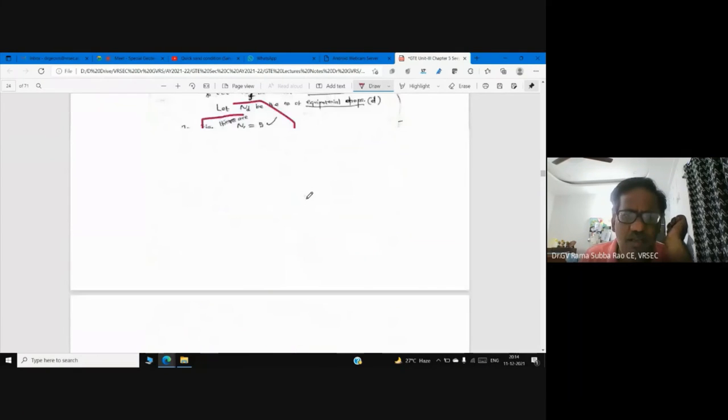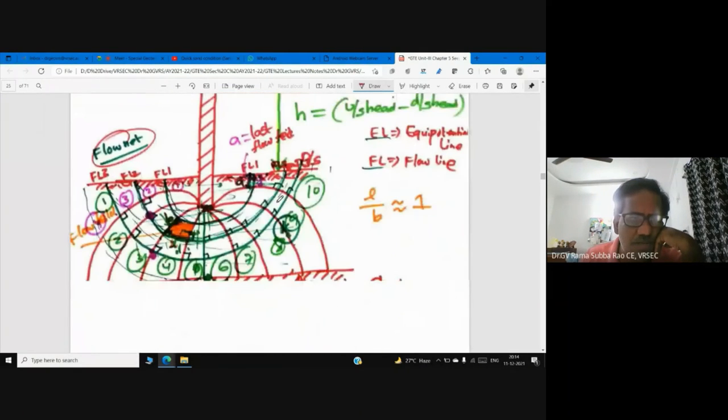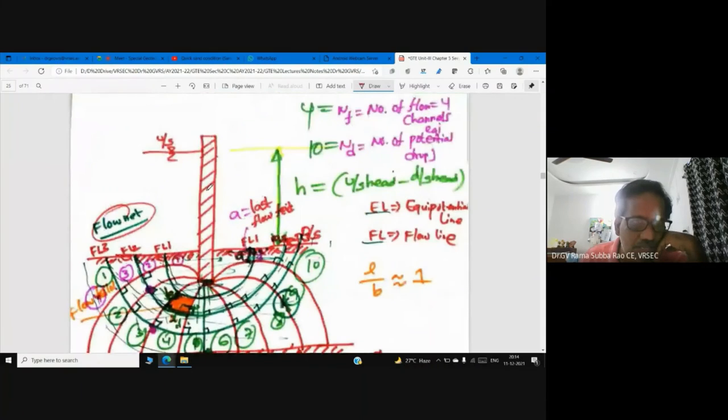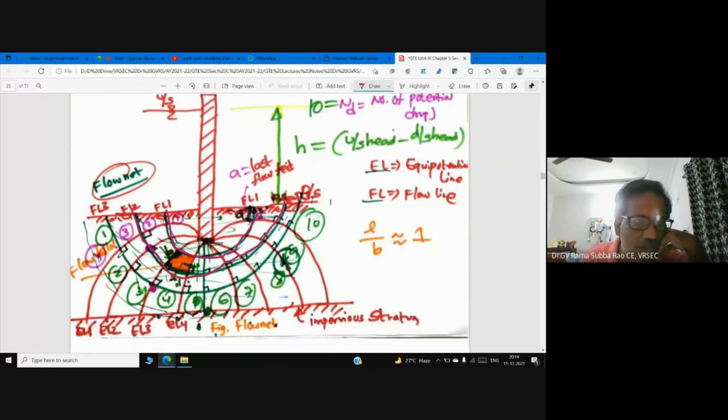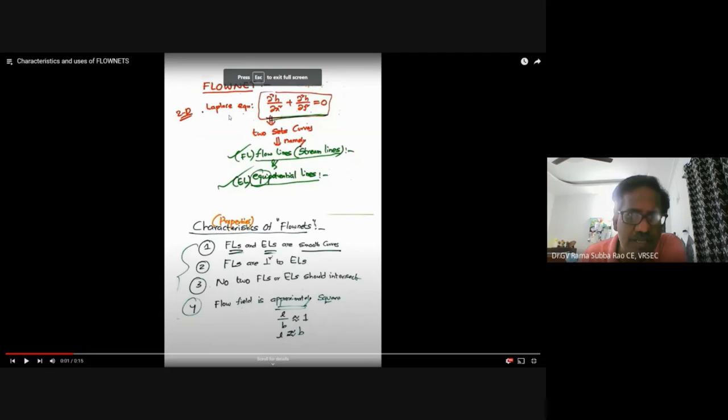Flow line is also called stream line. Here you see, flow net is based on 2D Laplace equation. It is a partial differential equation, a second order partial differential equation. You have to show two sets of curves: flow lines and equipotential lines.